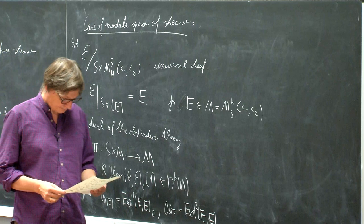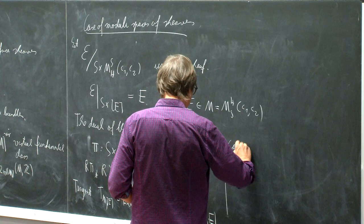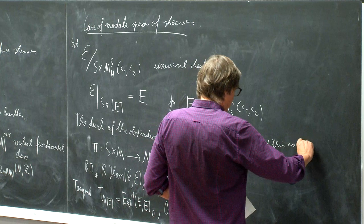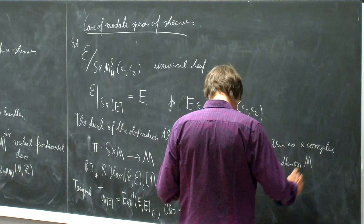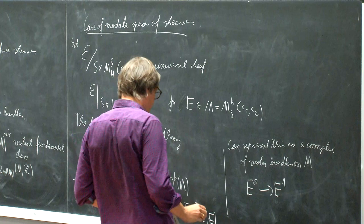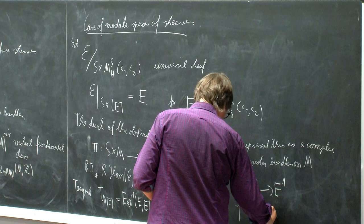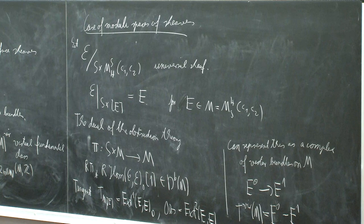One can resolve this so we can represent this element in the derived category as a complex of vector bundles on M, which would be E0 going to E1. This is just the dual of the previous complex and corresponds to the tangent bundle. So the virtual tangent bundle will indeed be E0 minus E1 in the K-group of vector bundles on the moduli space.